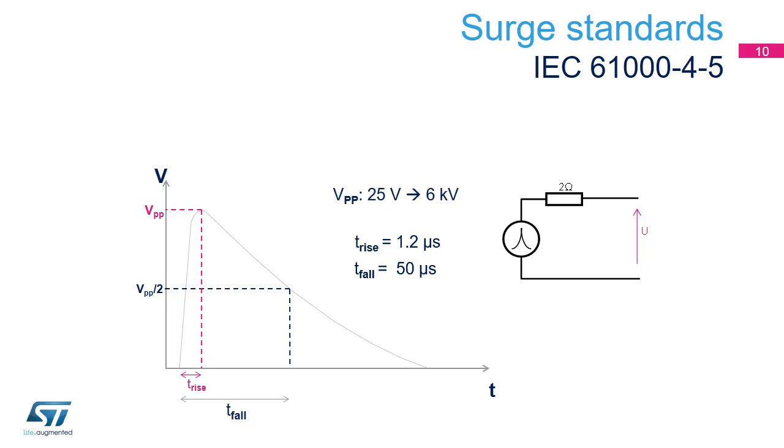If the circuit is in a protected environment, the peak is 25 volts, whereas if the circuit is outdoors and connected to the grid, the peak voltage can be 6 kilovolts or even higher.